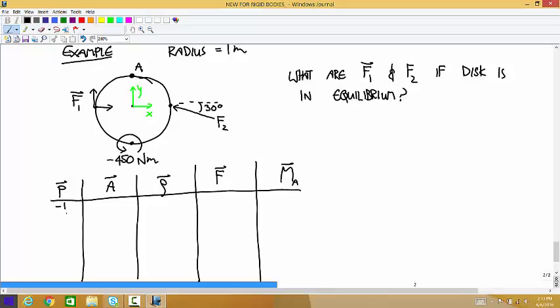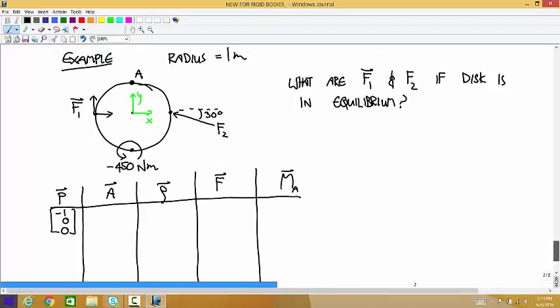Yeah, negative 1, 0y, and then this is all in the plane. So I'll write 0z. What are the coordinates of the about point? Yeah, 0, 1, 0. And so the rho vector is negative 1, negative 1, 0. This force vector F1 has an X and a Y component. So F1,X, F1,Y, 0.